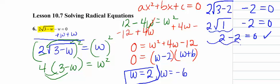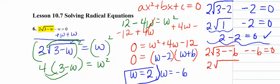Now let's check negative 6. So when I go to the original radical, I get 2 square root of 3 minus W, so 3 minus negative 6, minus negative 6 again equals 0. So that's 2 square root of 9 plus 6. So those minus negatives are pluses.